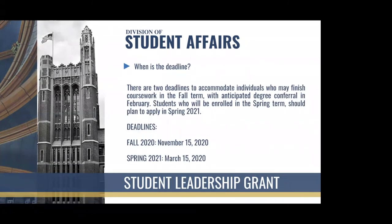There are currently two deadlines to accommodate individuals who may finish coursework in the fall term with an anticipated degree conferral in February. Students who will be enrolled for the entire academic year or the spring term should plan to apply in the spring term only. For the 2020–2021 academic year, the fall deadline is November 15th and the spring deadline is March 15th, 2021.